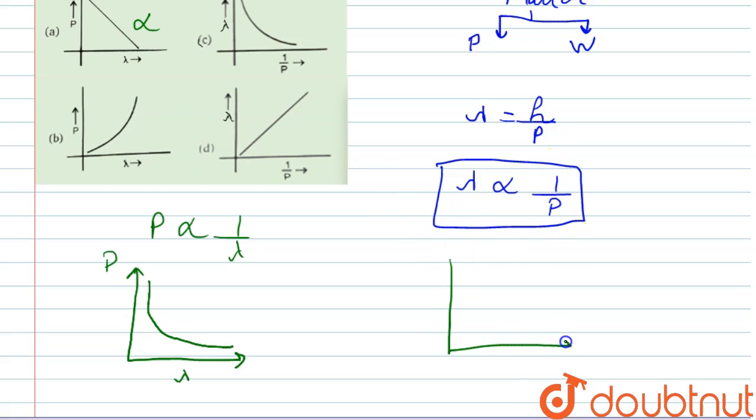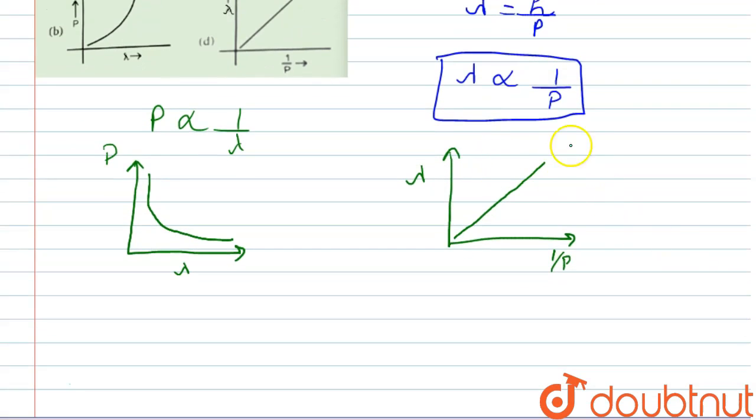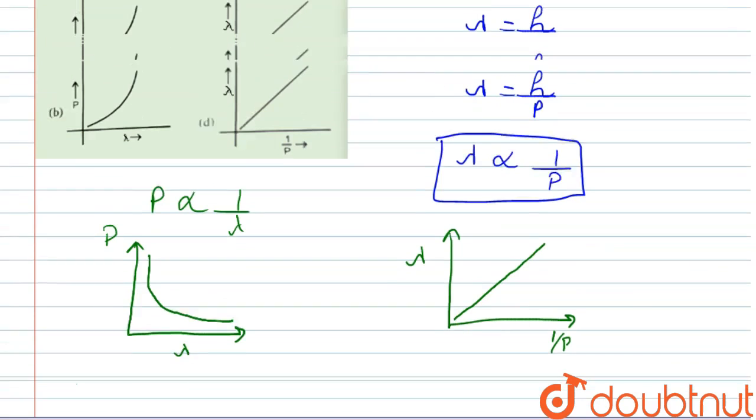So we will plot the graph between lambda and 1 by p. They will have a direct relation, that is it will be a straight line passing through the origin. Now this is the graph for lambda and 1 by p.